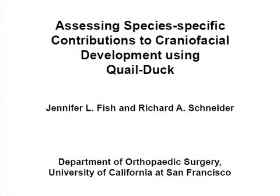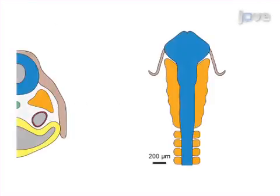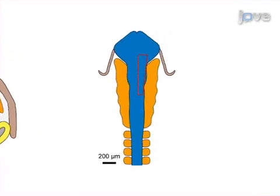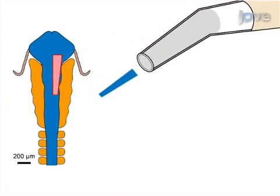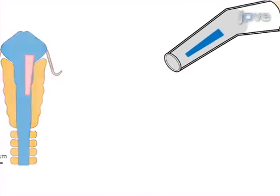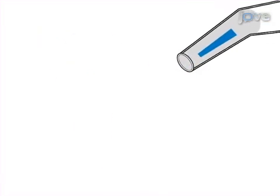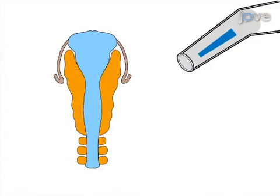The overall goal of this procedure is to use quail-duck chimeras as a means to investigate mechanisms through which neural crest cells generate species-specific patterns during craniofacial development. This is accomplished by first dissecting and removing a strip of the neural fold from the mid and anterior hindbrain region of a stage 9.5 quail embryo. The second step involves transferring the quail donor neural fold to the duck host embryo.